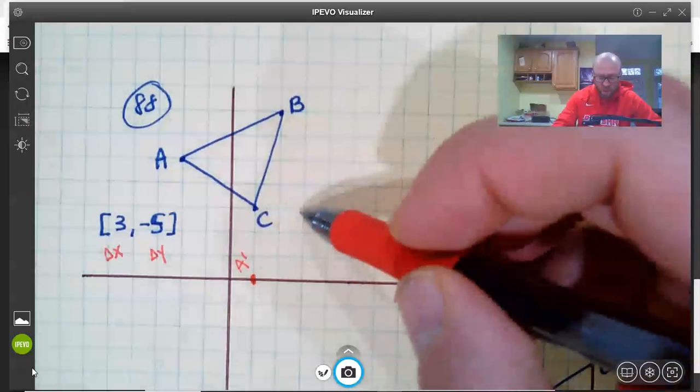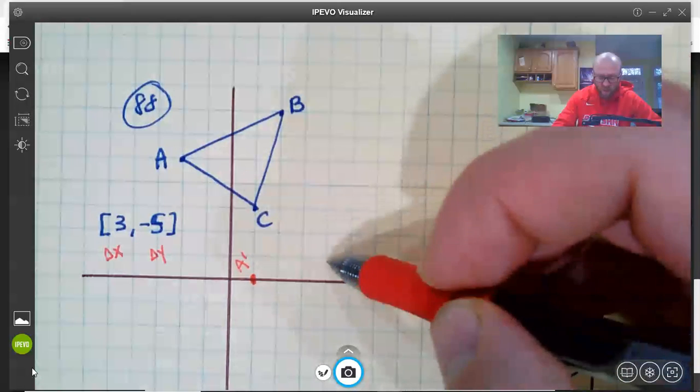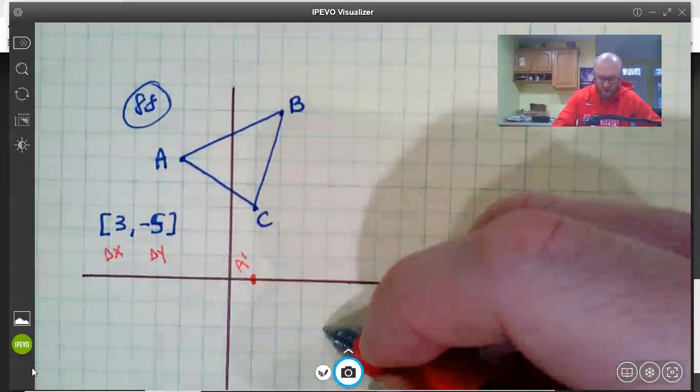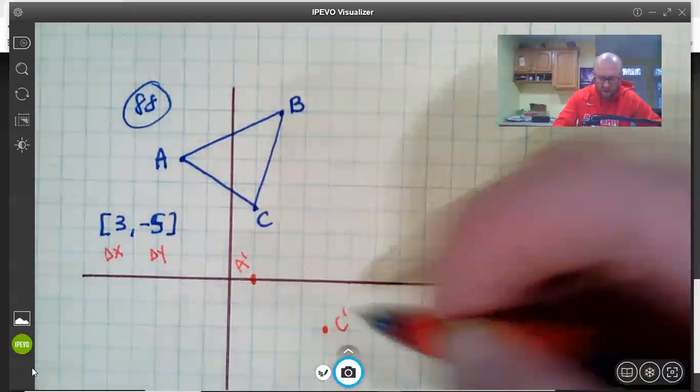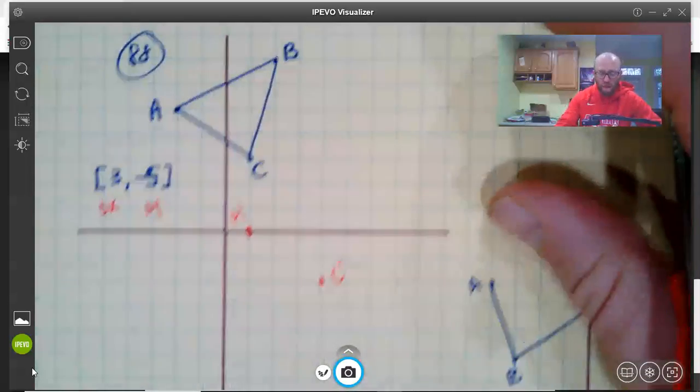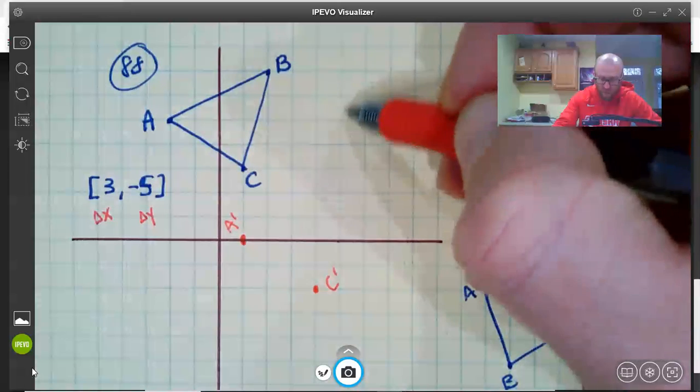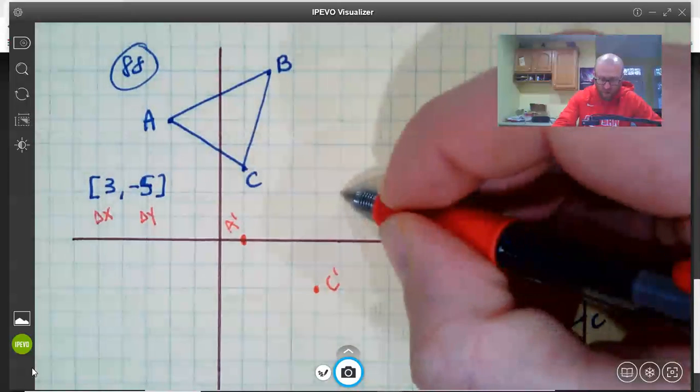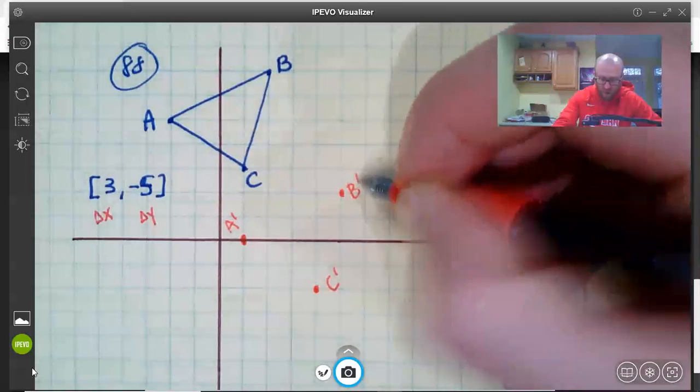For C, one, two, three, and one, two, three, four, five. Here's C prime. And for B, one, two, three, and one, two, three, four, five. Here's B prime.